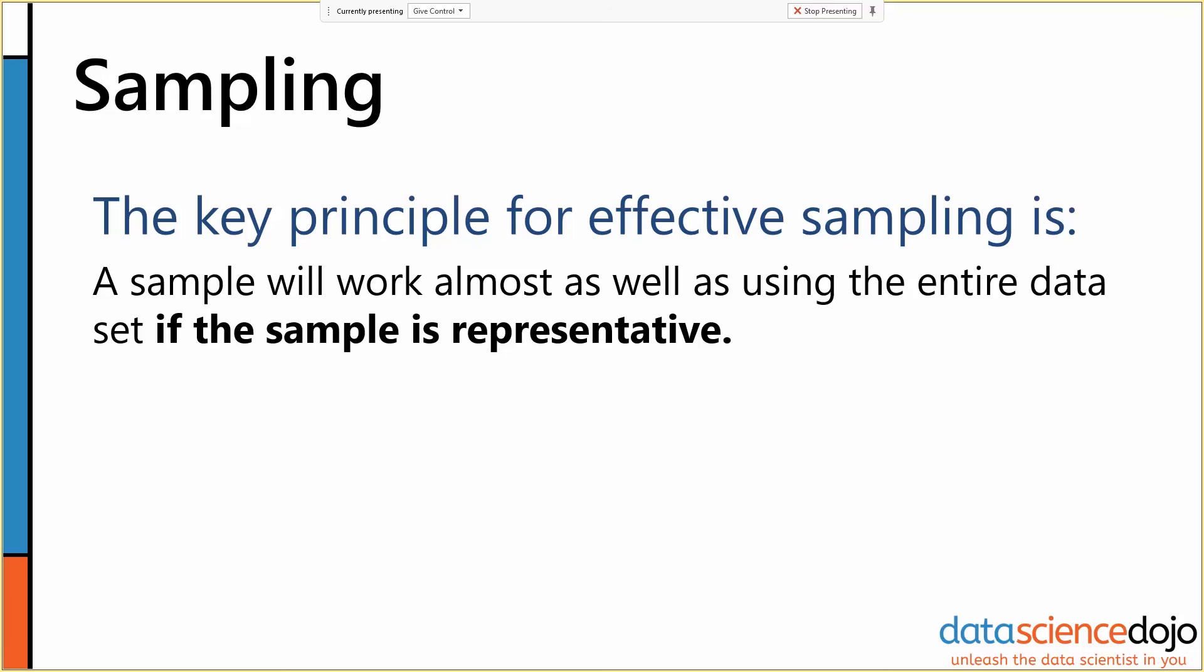If we aren't in an anomaly detection context, and we don't want outliers muddying the waters, so to speak, we'll want to exclude them, and sampling can help us do that.